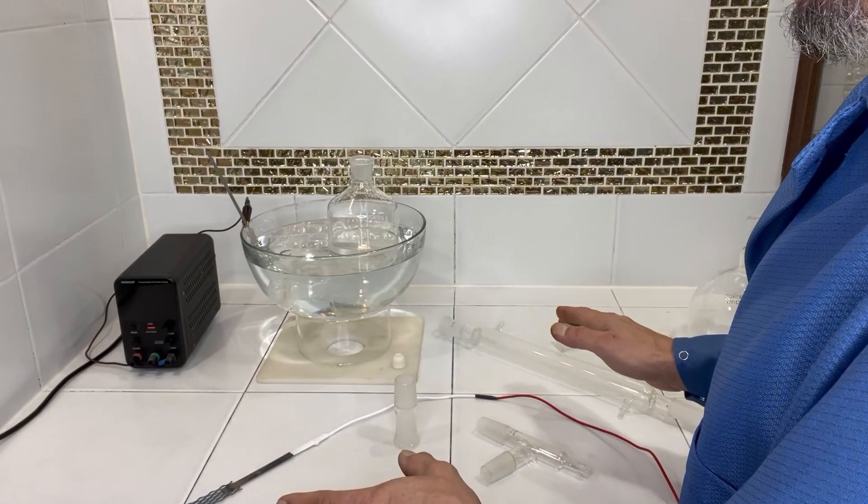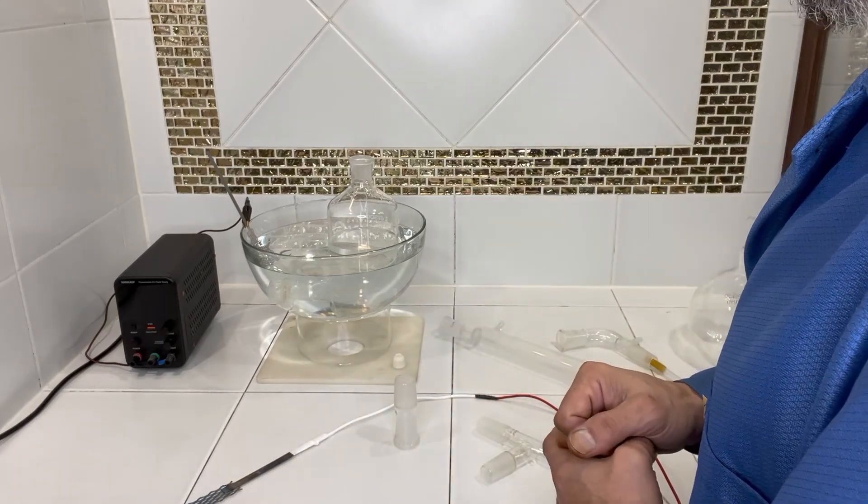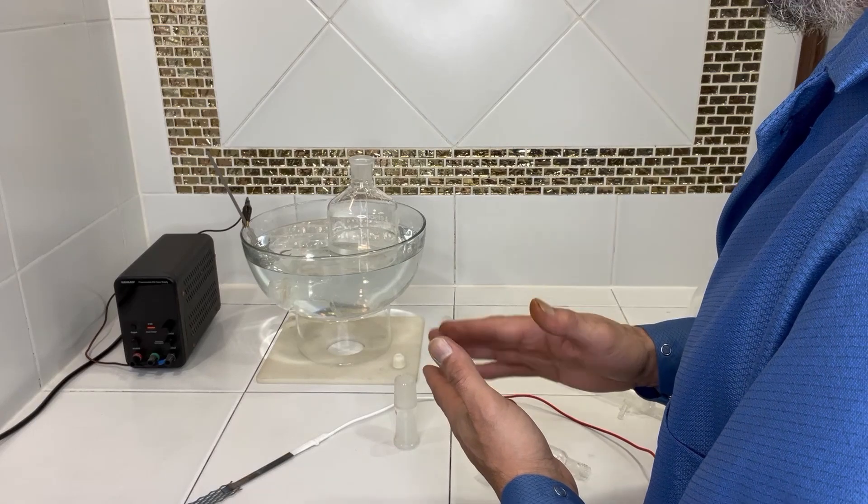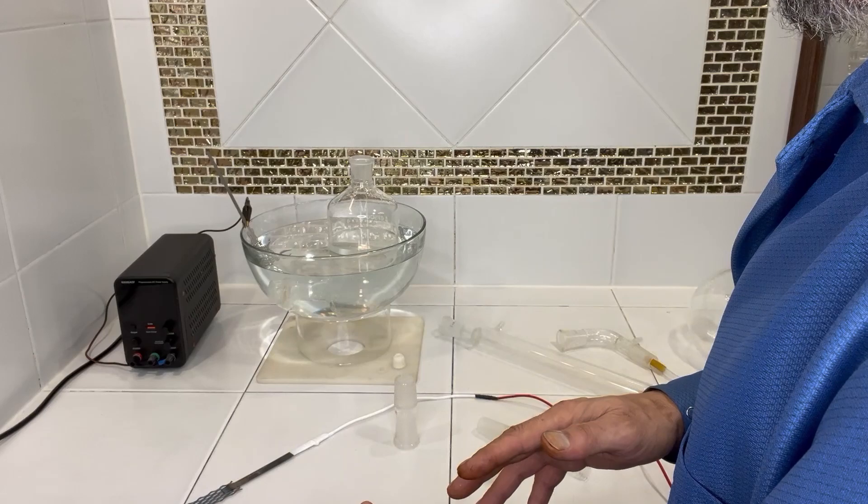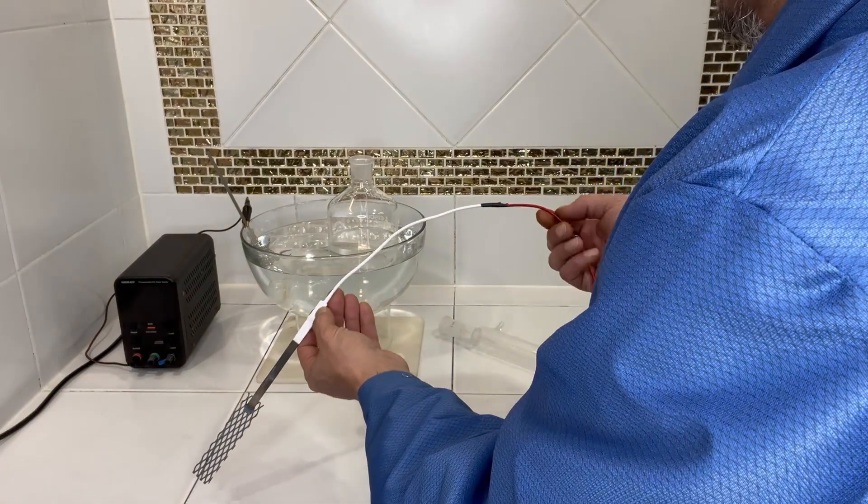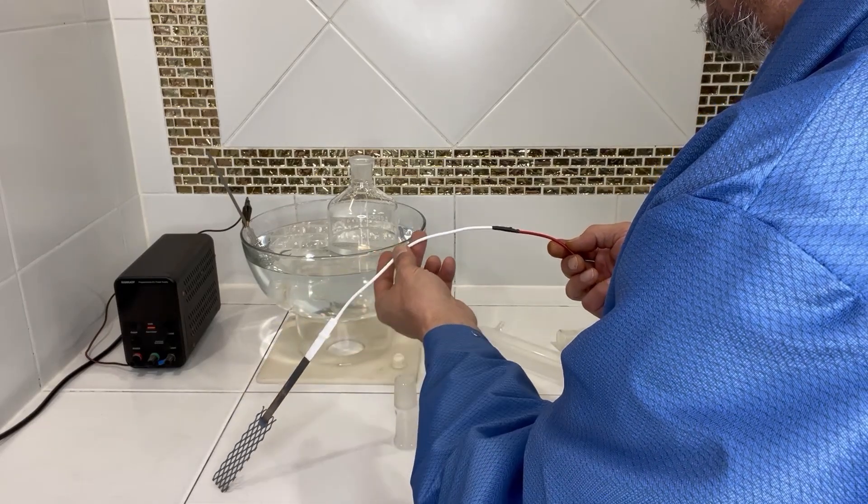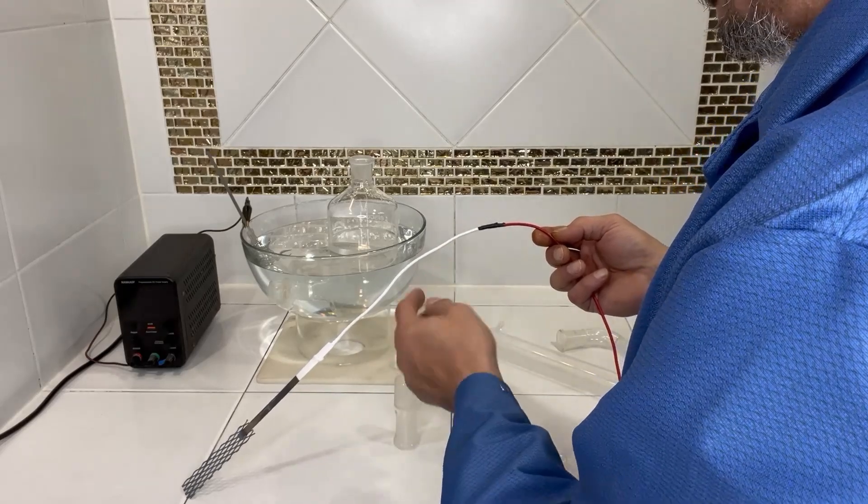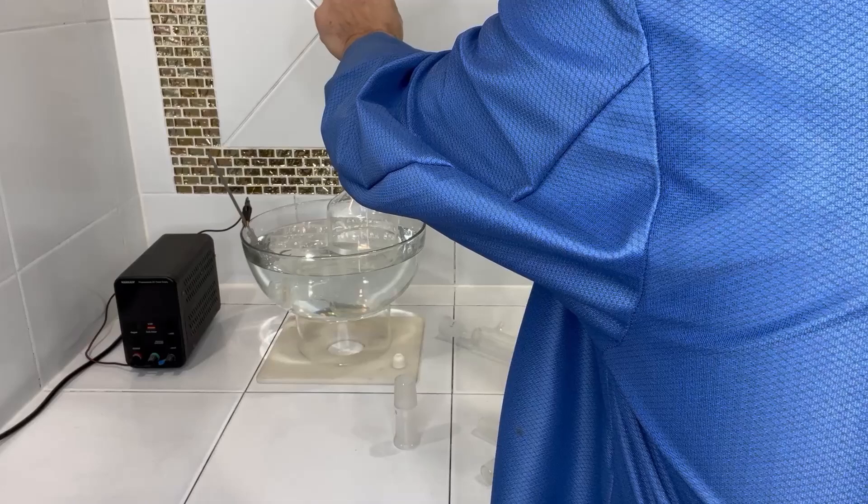Now depending on what type of reaction you're looking for, you can use different types of cathodes and anodes, nickel, aluminum, lead, depending on what type of reaction. Now for this reaction, we want to make sodium hydroxide and chlorine. So what I've done is attach an electrical wire to my anode and I've wrapped this in PTFE tape, Teflon tape. So the chlorine gas doesn't permeate this wire and we'll go ahead and lower that down into the aspirator bottle.